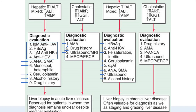For chronic cholestatic pattern, evaluation includes drug history for drug-induced liver injury, AMA for primary biliary cirrhosis, and ultrasound, MRCP, and ERCP for obstructive or surgical causes of jaundice. If the cause remains unknown after this diagnostic evaluation, one can proceed to liver biopsy.